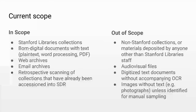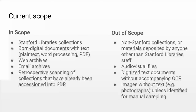Our workflows for high-risk data review prioritize materials with plain text, including web and email archives. Categories listed as out of scope are generally out of scope for technical reasons based on their tools, but they can be sampled on a case-by-case basis if the resources in that collection are considered particularly high risk.